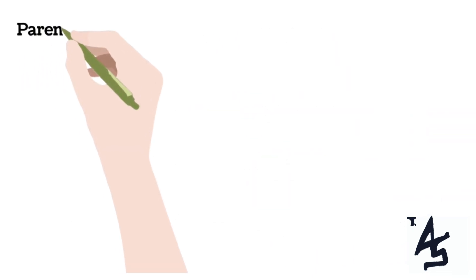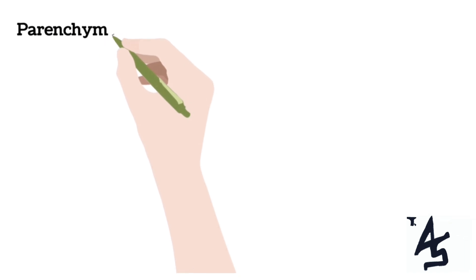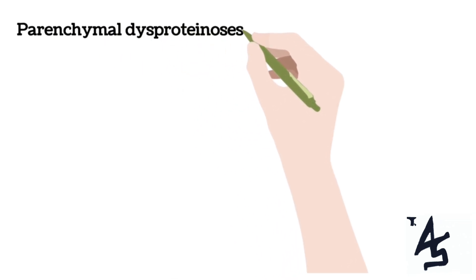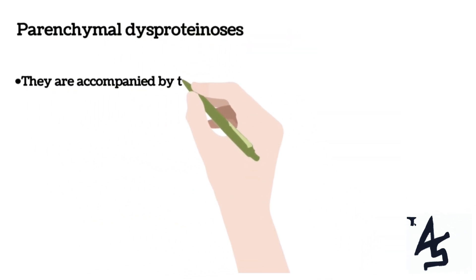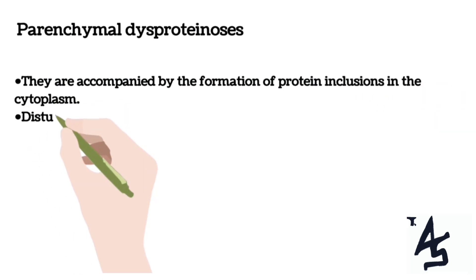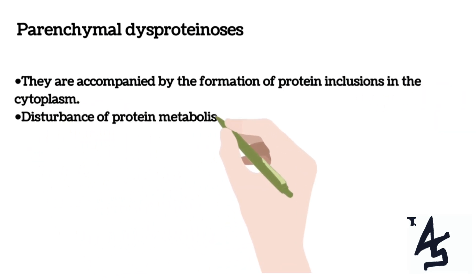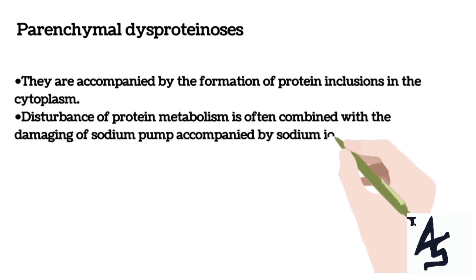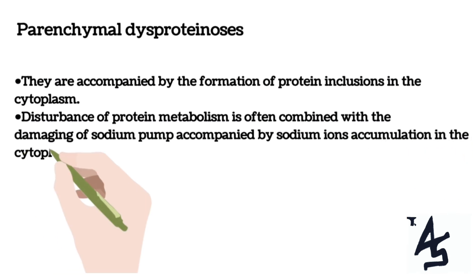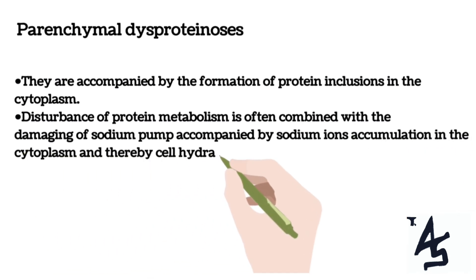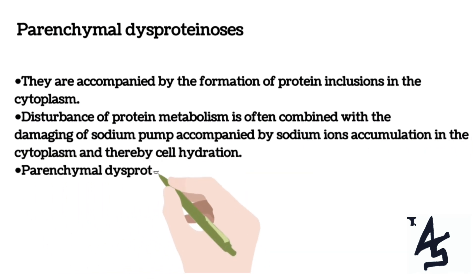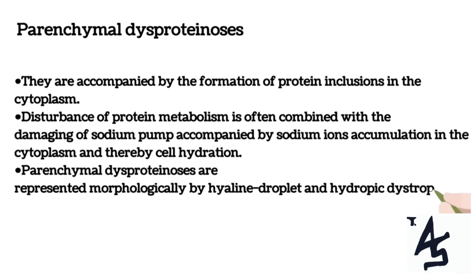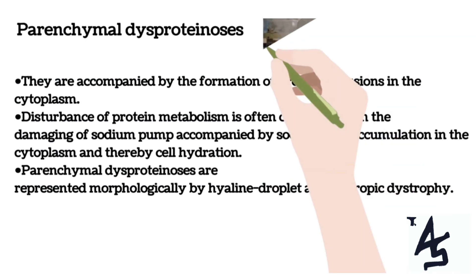Now let's move on to the parenchymal dystrophies. The first one is called parenchymal dysproteinoses, where they are accompanied by the formation of protein inclusions in the cytoplasm. Disturbance of protein metabolism is often combined with damaging of the sodium pump, which causes accumulation of sodium ions in the cytoplasm and thereby develops cell hydration.